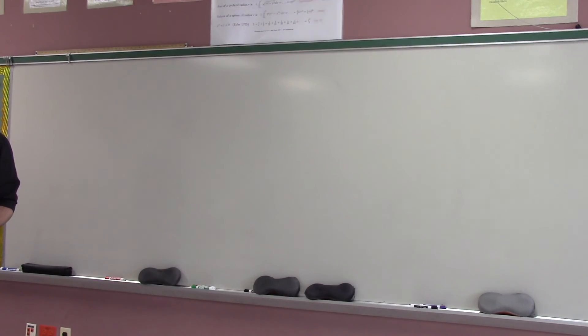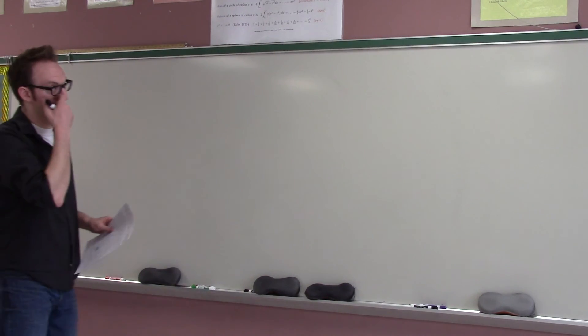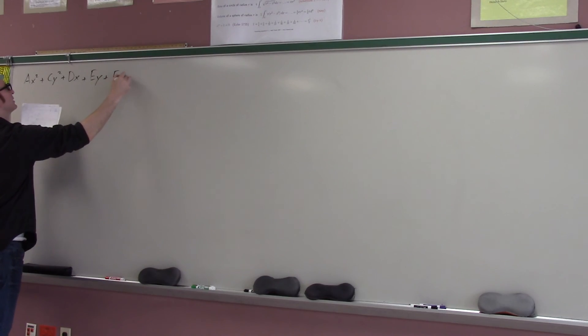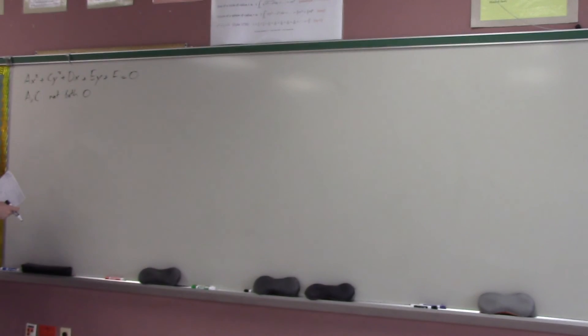Alright, first of all, what is the whole point of this entire lesson? Well, I will explain. We have previously seen that if I give you a second degree equation of the form ax squared plus cy squared plus dx plus ey plus f equals zero, we have previously seen that this will turn into one of our conic sections. And in particular, I suppose I have to be a little bit careful about how to do this, so I should say that a and c are not both zero.